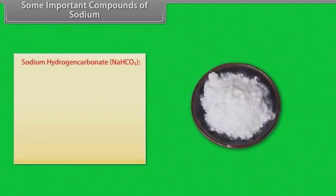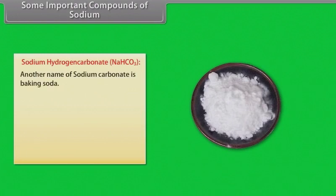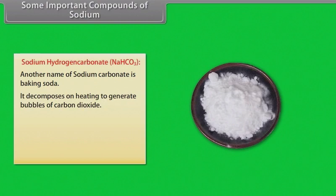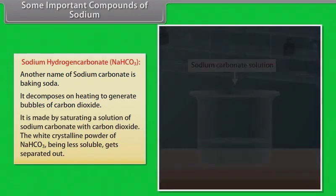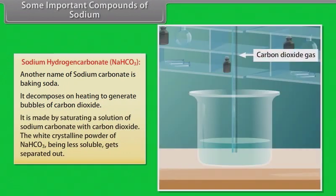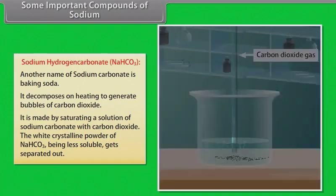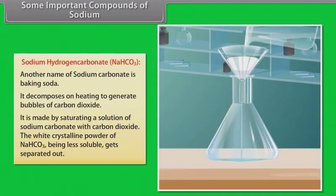Sodium hydrogen carbonate. Another name of sodium hydrogen carbonate is baking soda. It decomposes on heating to generate bubbles of carbon dioxide. It is made by saturating a solution of sodium carbonate with carbon dioxide. The white crystalline powder of NaHCO3, being less soluble, gets separated out.